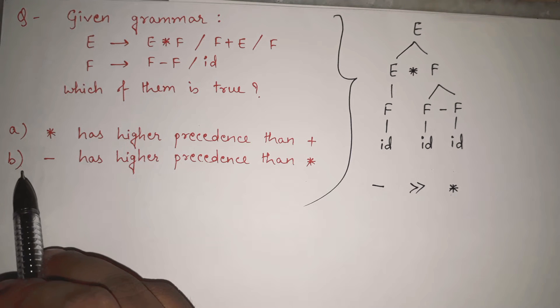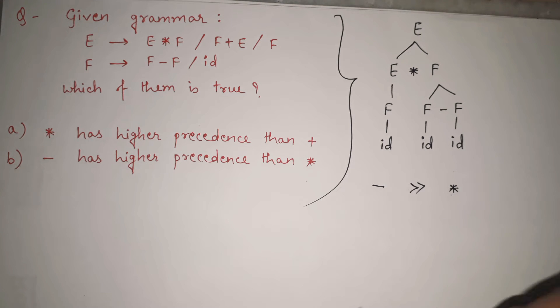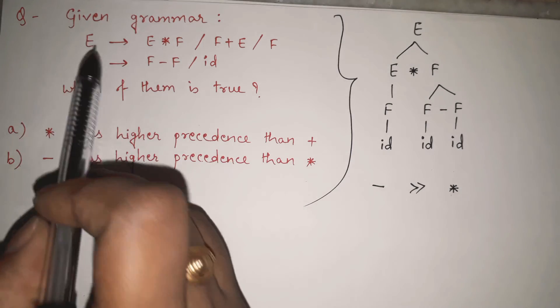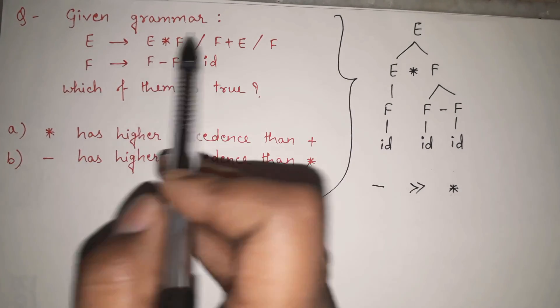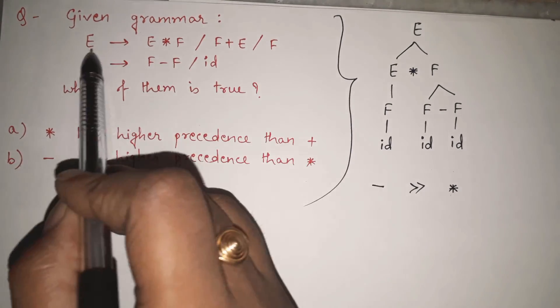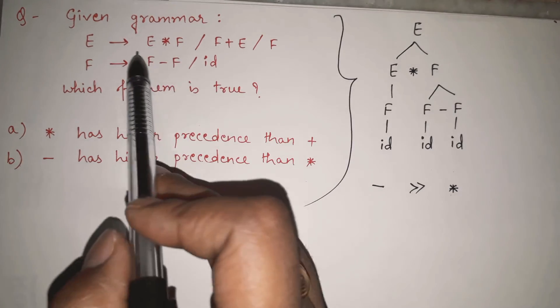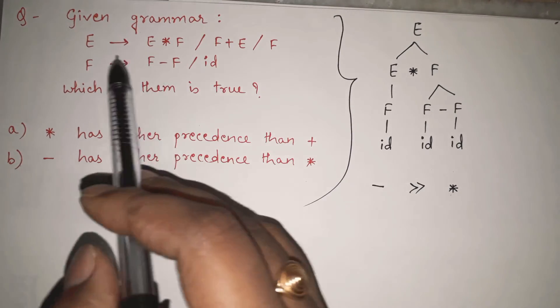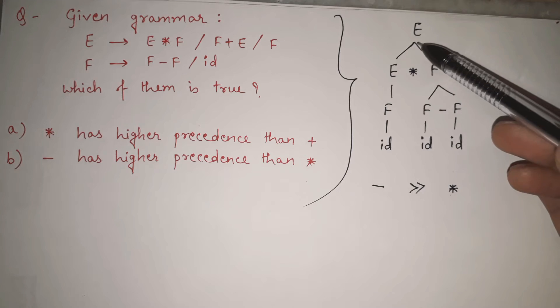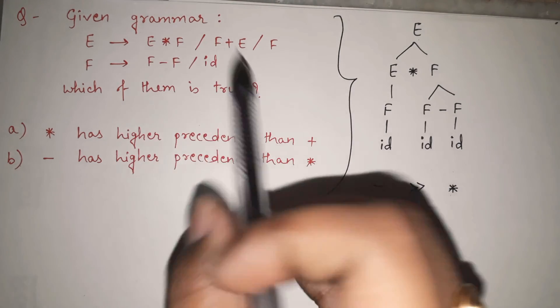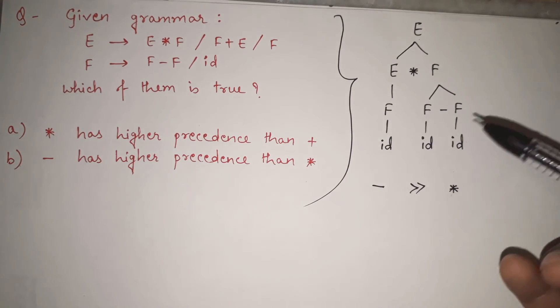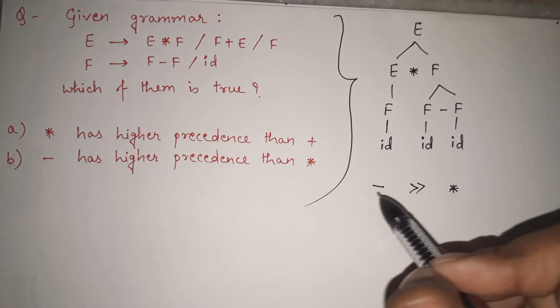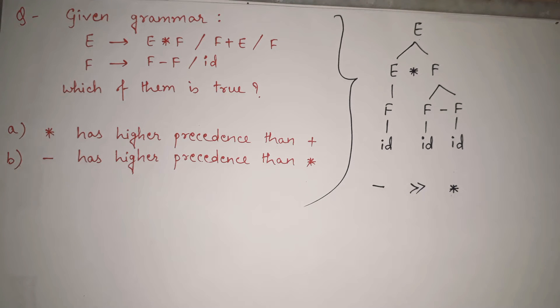Means option B seems to be correct, right? But we need to be double sure. So what we will do, here we are having mainly two productions. We have used E gives F also, but mainly two productions. E star F and F plus E. In this tree what I have done, I have started with E star F. Now let me start with this and we will verify that we already got the answer. But we will just verify that if it is correct or not.